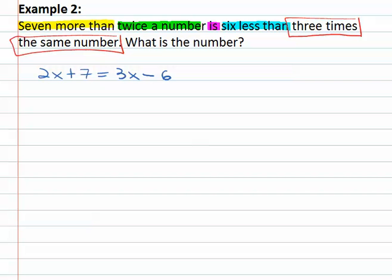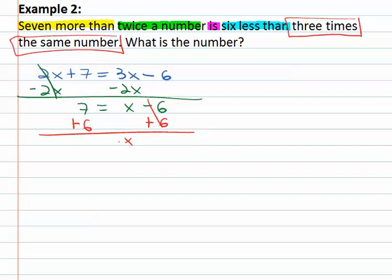First get the variable on one side by subtracting 2x from both. Gives us 7 equals x minus 6 and the one in front of a variable is optional. And then finally adding six to both sides to get the x alone. That number that's described here is thirteen.